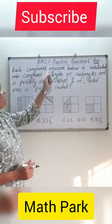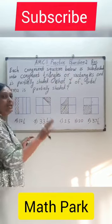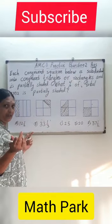Let's start with the answer for AMC 8 practice question 2. We are given 4 squares which are divided into congruent triangles or rectangles.